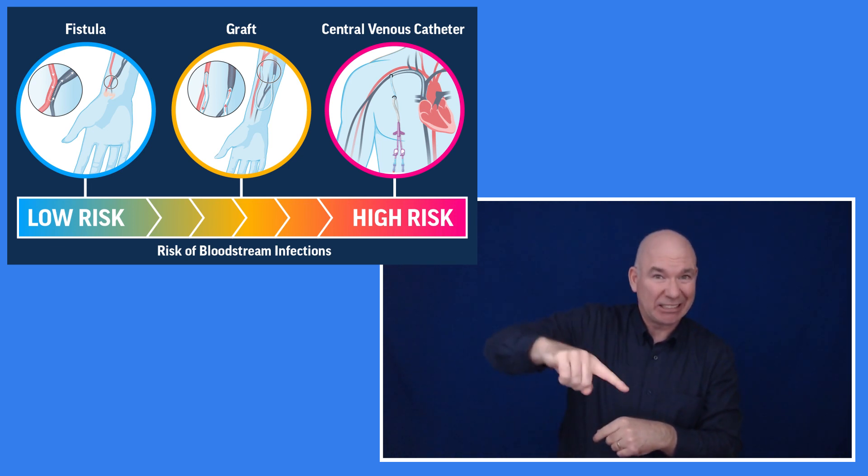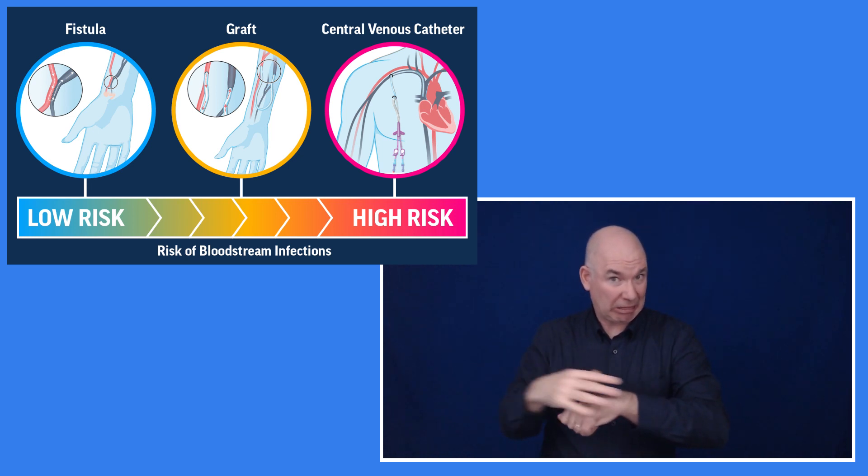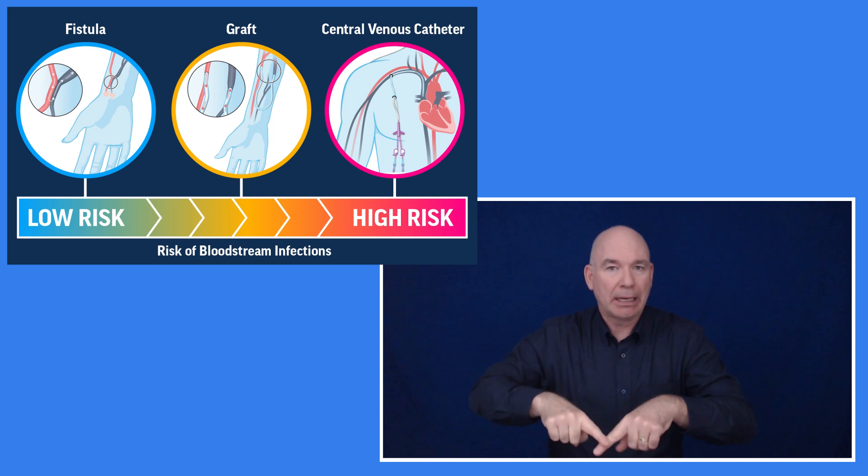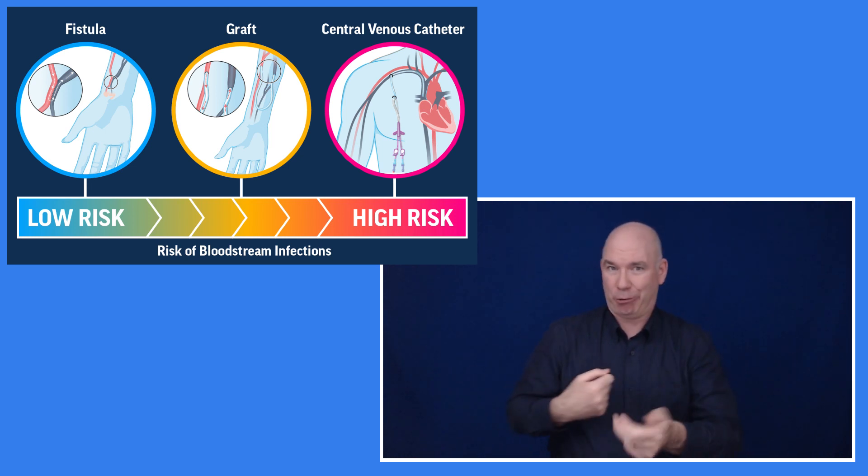The risk for staph infection can depend greatly on how a person's blood circulation is connected to the dialysis machine, or vascular access type. There are three access types: fistula, graft, and central venous catheter.